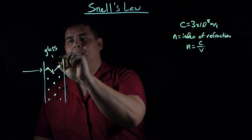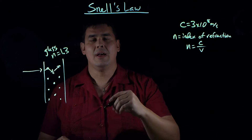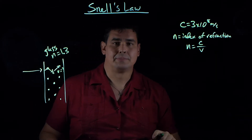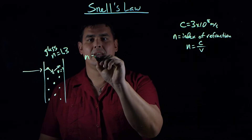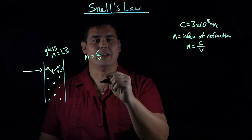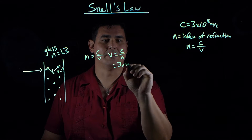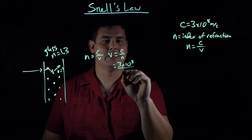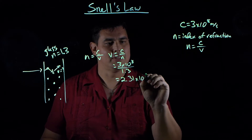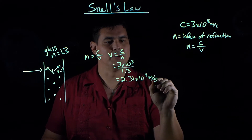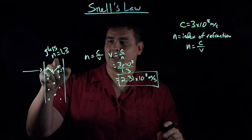Let's say we have a piece of glass with an index of refraction of 1.3, and I want to know how fast is the light going inside it. I can figure that out because speed of light is just a constant. So n equals c over v, and if I want to solve for v, then v equals c over n. That's 3 times 10 to the 8th divided by 1.3, which gives you 2.31 times 10 to the 8th meters per second — that's how fast light travels in glass with an index of refraction of 1.3.